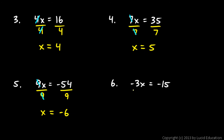Number 6: negative 3x equals negative 15. There's a negative 3 multiplied by the x, but that's okay — that just means I need to divide both sides by negative 3. On the left, the negative 3 in the numerator and denominator cancel each other out, leaving me with x. On the right, I have negative 15 divided by negative 3, which is positive 5.